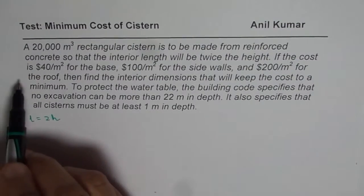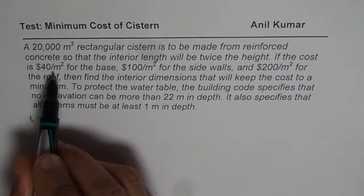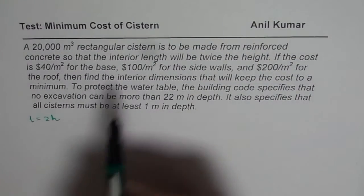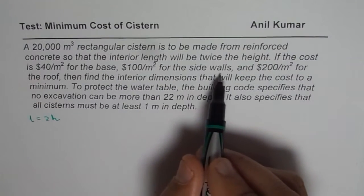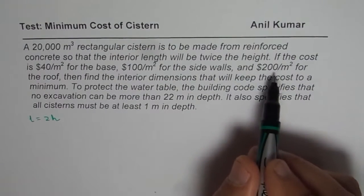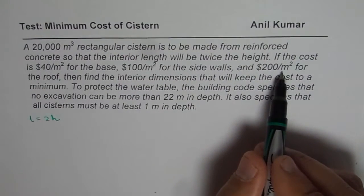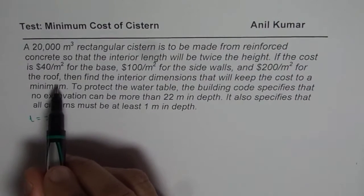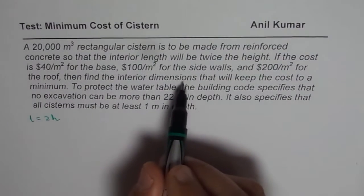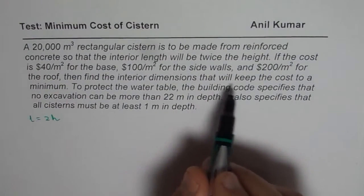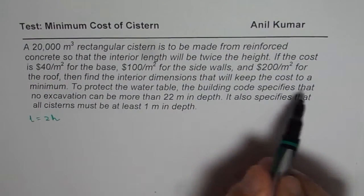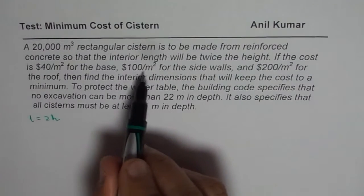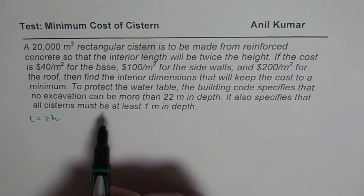If the cost is 40 per meter square for the base, 100 per meter square for the side walls, and 200 per meter square for the roof, then find the interior dimensions that will keep the cost to a minimum. So we have cost which is different from different surfaces.